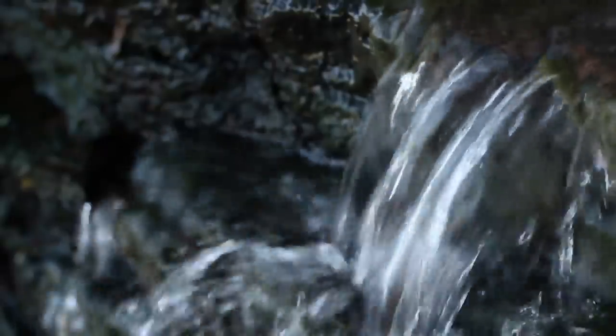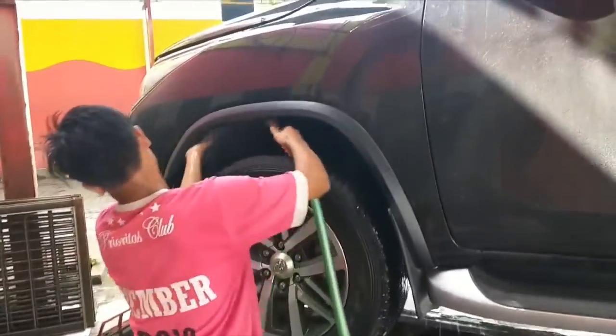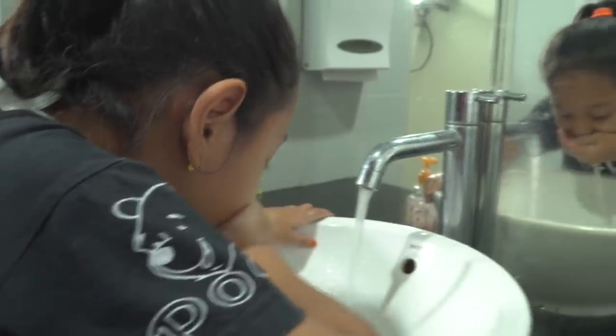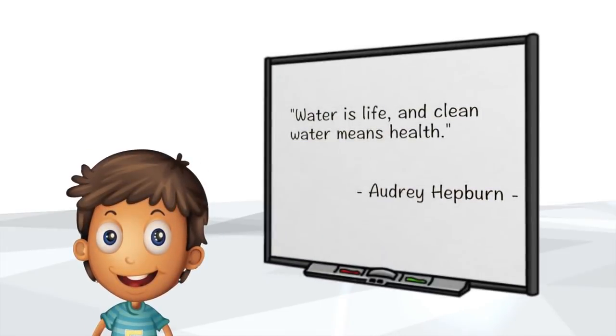Sobat X-Science, siklus air menjamin ketersediaan air di bumi yang kita cintai ini. Namun, kita harus tetap hemat dalam penggunaan air. Jika kita boros air, misalnya sering mencuci mobil atau kendaraan, atau lupa mematikan keran air, maka air bersih yang tersedia akan berkurang jumlahnya. Terima kasih telah menonton!